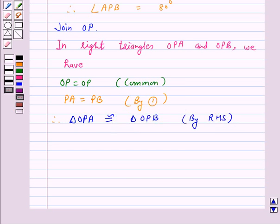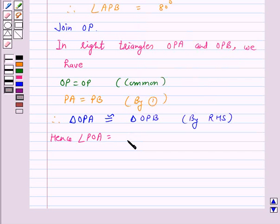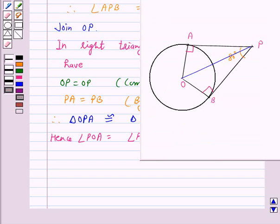Therefore, triangle OPA is congruent to triangle OPB by RHS. Hence, angle POA is equal to angle POB.